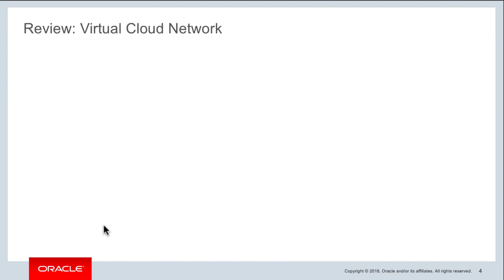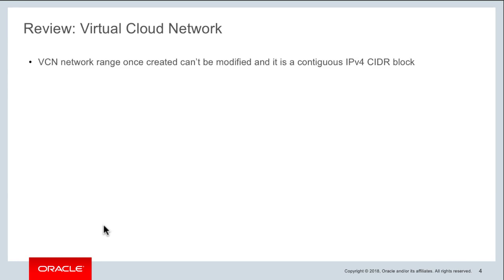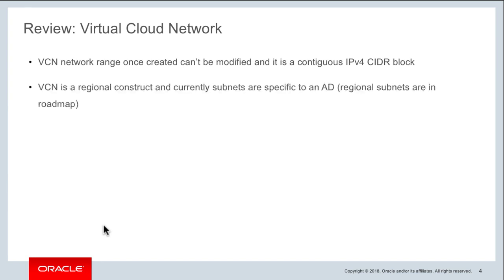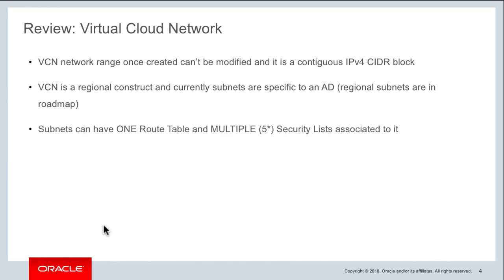Before we go on to the best practices, a quick recap of some key things to remember for Virtual Cloud Network. The VCN network range is defined when you create a VCN and it cannot be modified afterwards — whatever range you define at the start is a contiguous IPv4 CIDR block. VCN is a regional construct, so whenever you create a VCN it is available across all fault domains and availability domains in that region. Currently, subnets within a VCN are specific to an availability domain, but regional subnets are on the roadmap.